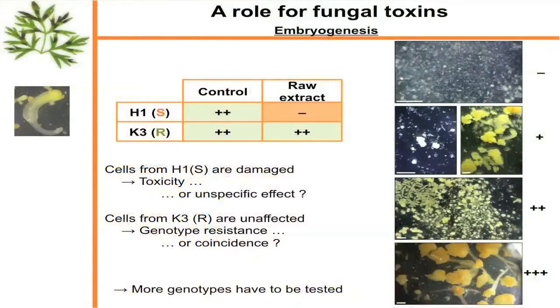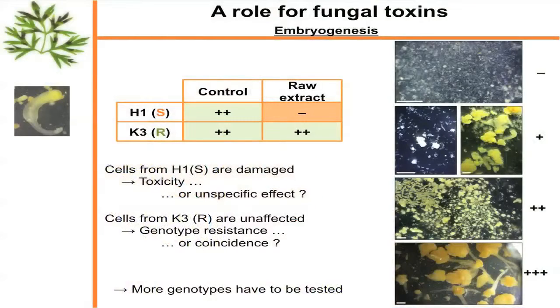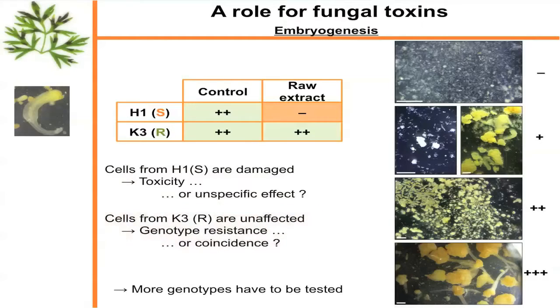The problem is we have only two cultivars, two lines. Plant cells from H1 are damaged — is this toxicity or an unspecific effect? Plants from K3 are unaffected — is this genotype resistance or coincidence? To go beyond that, we need to add several genotypes and see whether there is a correlation between whole plant resistance to the fungus and plant cell resistance to fungal extracts.